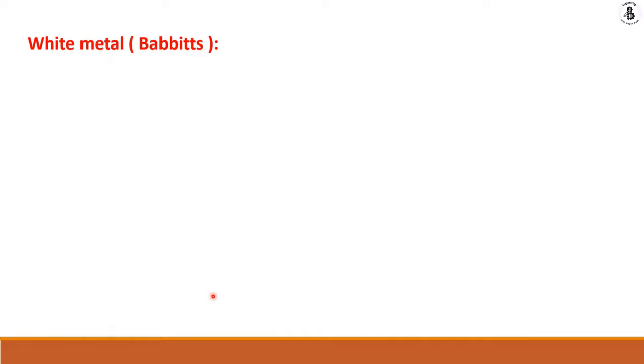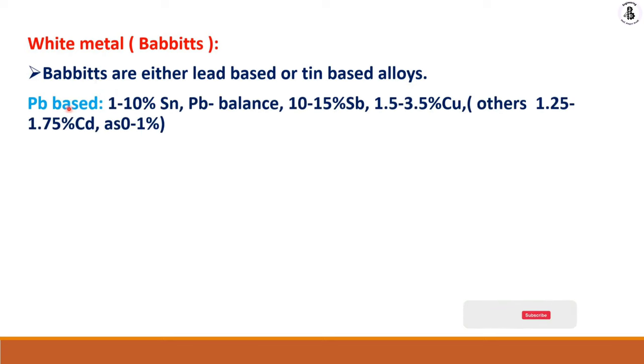The basic materials start with white metals or Babbitts. Babbitts are either lead-based or tin-based alloys. For lead-based or Pb-based, the compositions for white metals or Babbitts are: